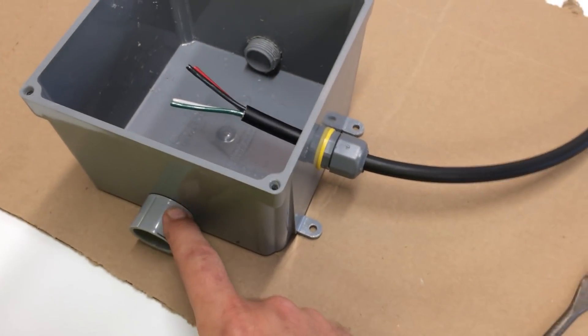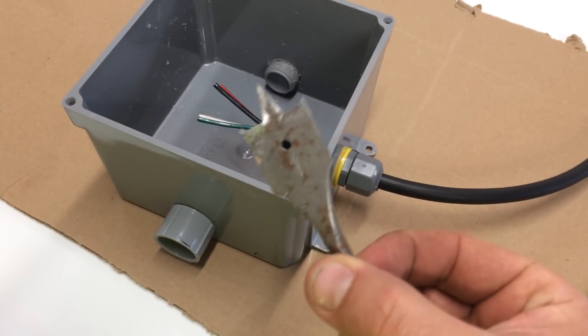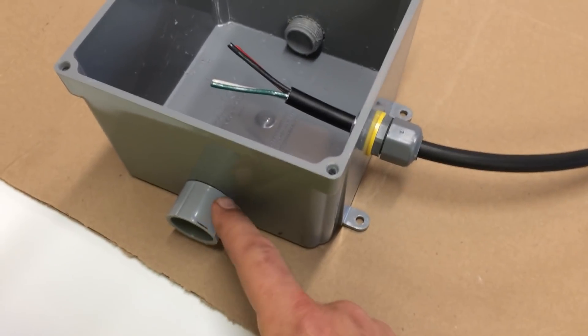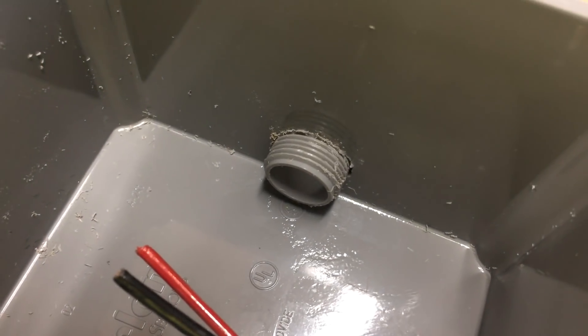And what I did was on the bottom and the top, I drilled holes with a 1 inch drill bit, spade bit, that would take a 3 quarter inch conduit adapter. And I've just got that literally threaded on through the hole that I made.